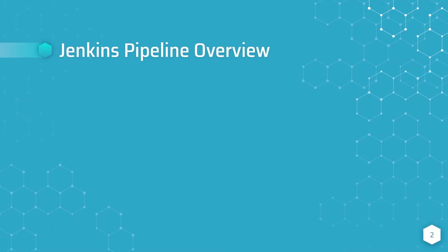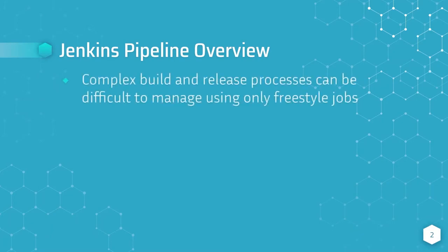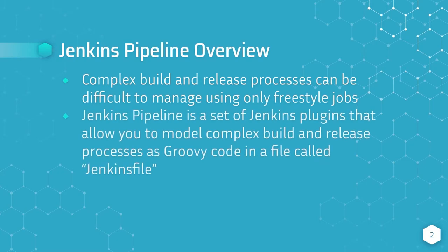Let's begin with a brief overview. As a team's software development process matures, it can become difficult to model the build and release process using only freestyle jobs in Jenkins. In order to mitigate the complexity of managing multiple freestyle jobs, the Jenkins pipeline plugins allow you to model those complex build and release processes as Groovy code in what's called a Jenkins file.